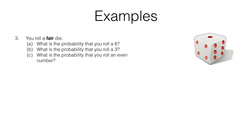We're told that we are rolling a fair die — 'die' is the singular, 'dice' is plural. The fact that it is fair means each outcome is equally likely: you're just as likely to get a five as a two or a three as a six. The probability of each outcome is one sixth. In part A, the probability of rolling a six is one sixth — that event has only one outcome out of six possible. In part B, the probability of rolling a three is also one sixth.